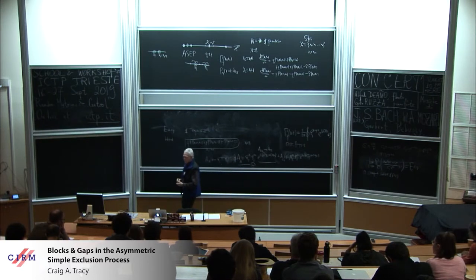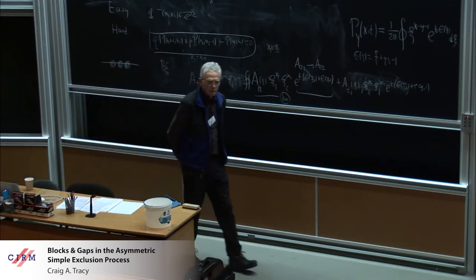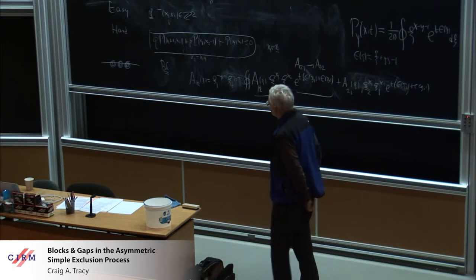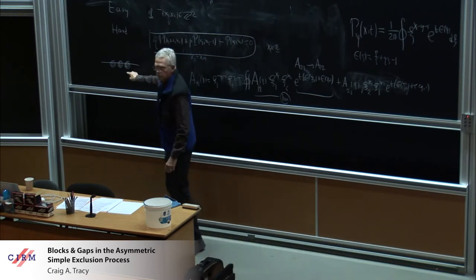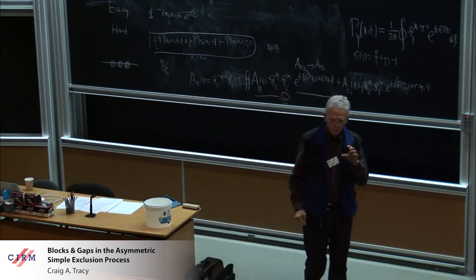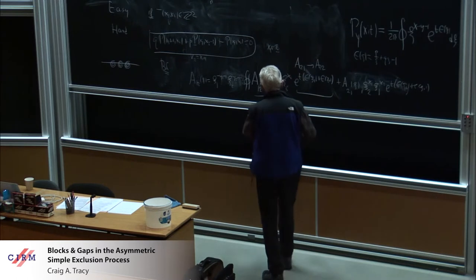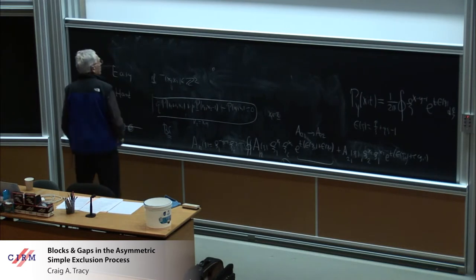Now you want to try this for general n. But you have to check something. Suppose you have three particles. There's going to be a new configuration, and that would lead to a different differential equation. But you have to show that the boundary condition from two particles implies this three particle boundary condition. That's the origin of the Yang-Baxter equations. It's saying that the two particle boundary conditions imply the three particle boundary conditions.